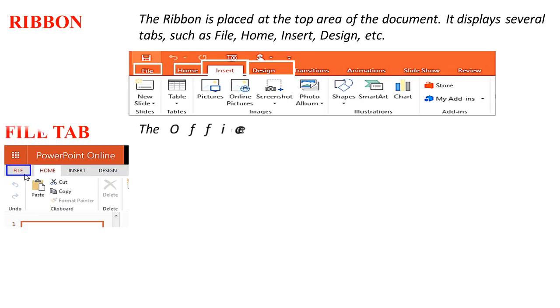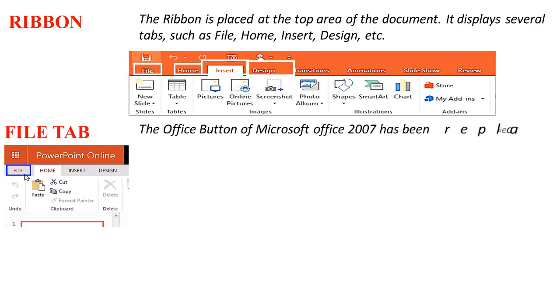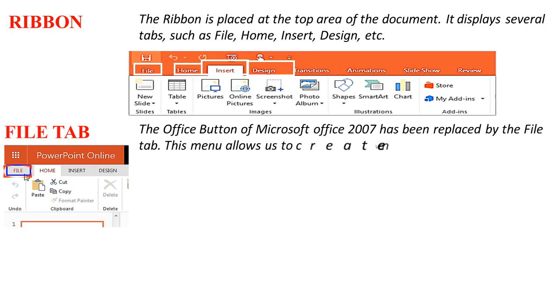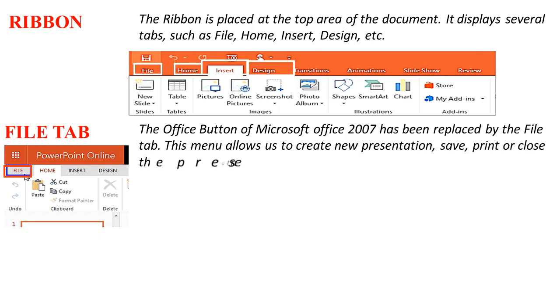File Tab: The Office button of Microsoft Office 2007 has been replaced by the File Tab. This menu allows us to create a new presentation, save, print, or close the presentation.